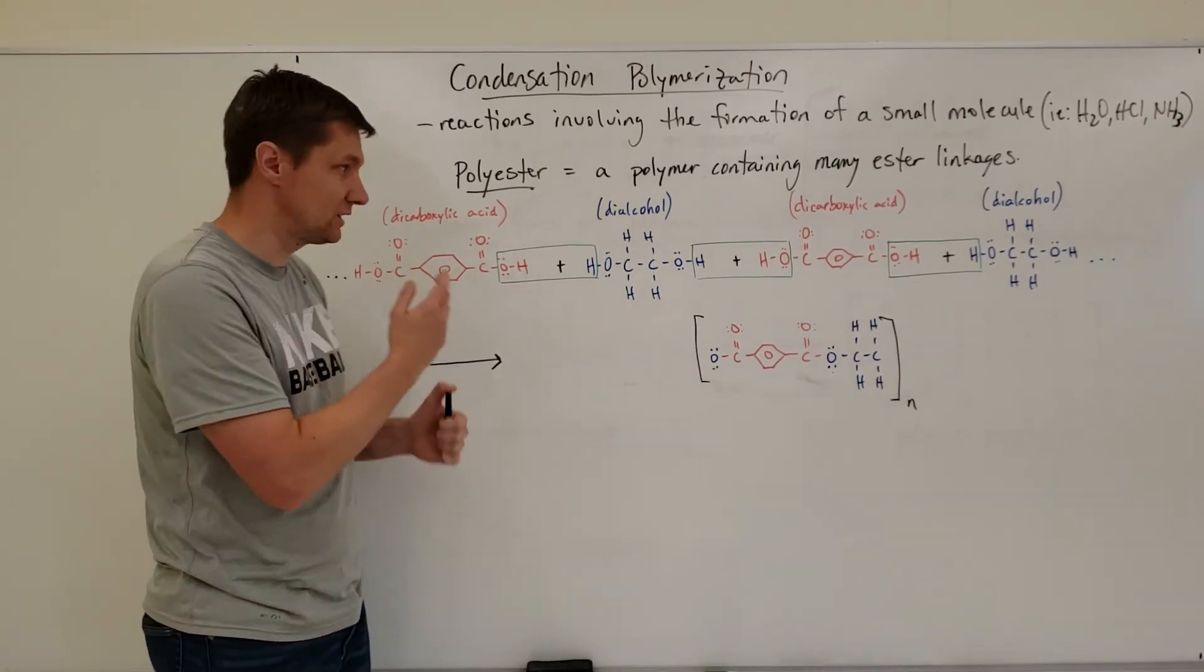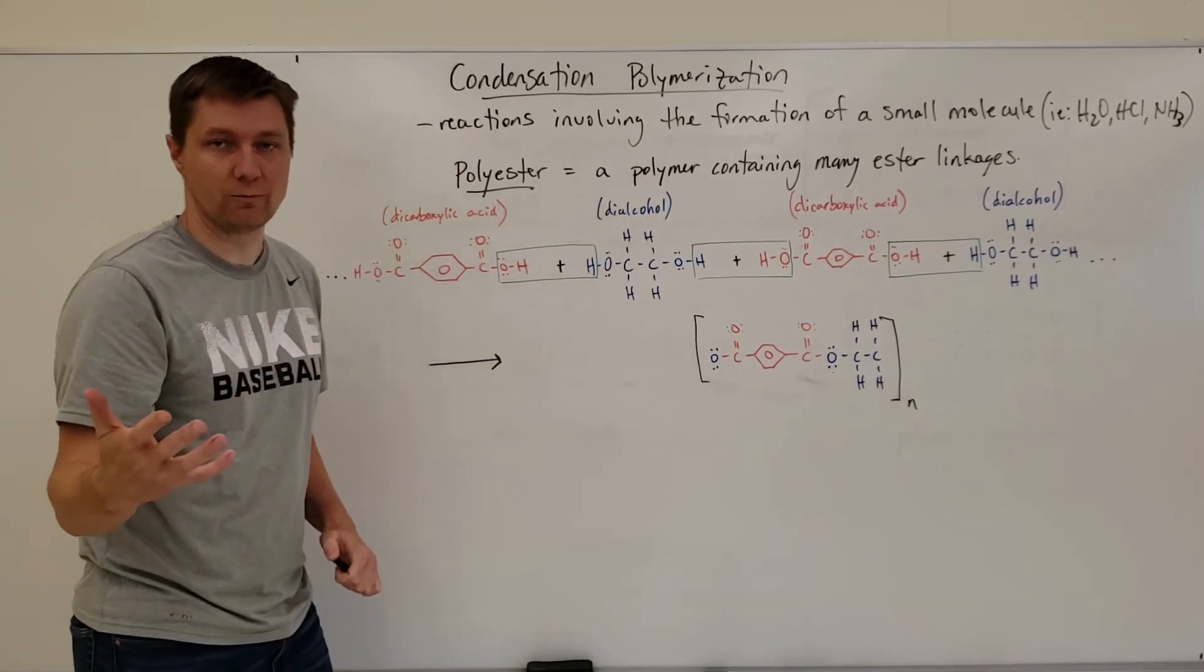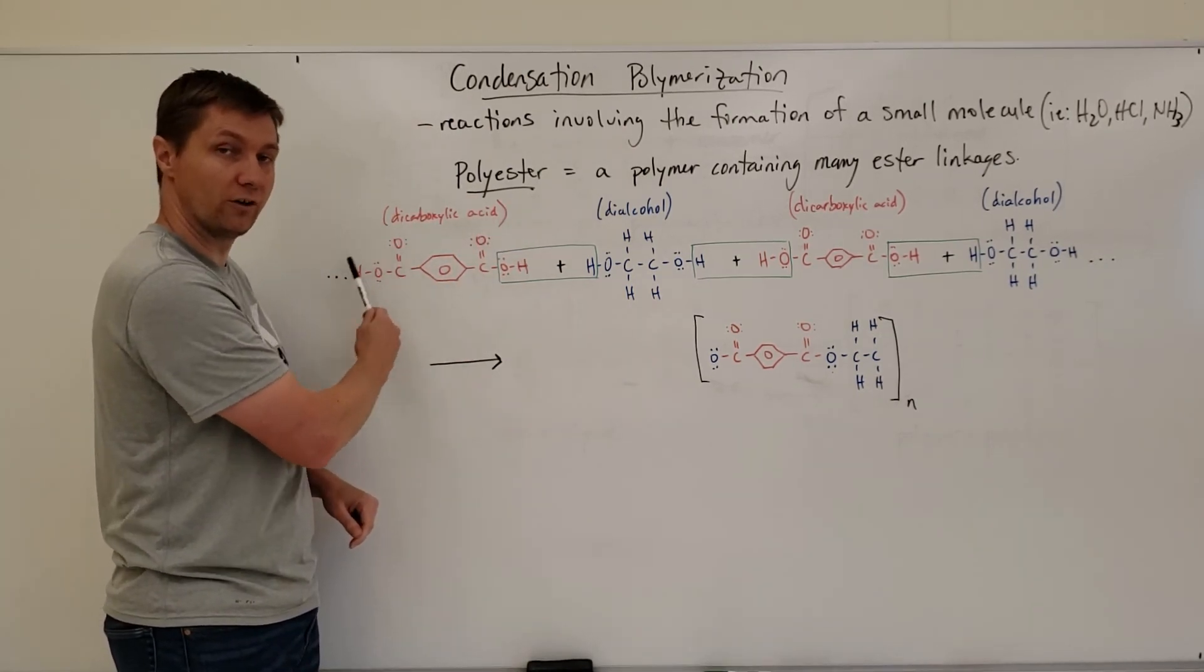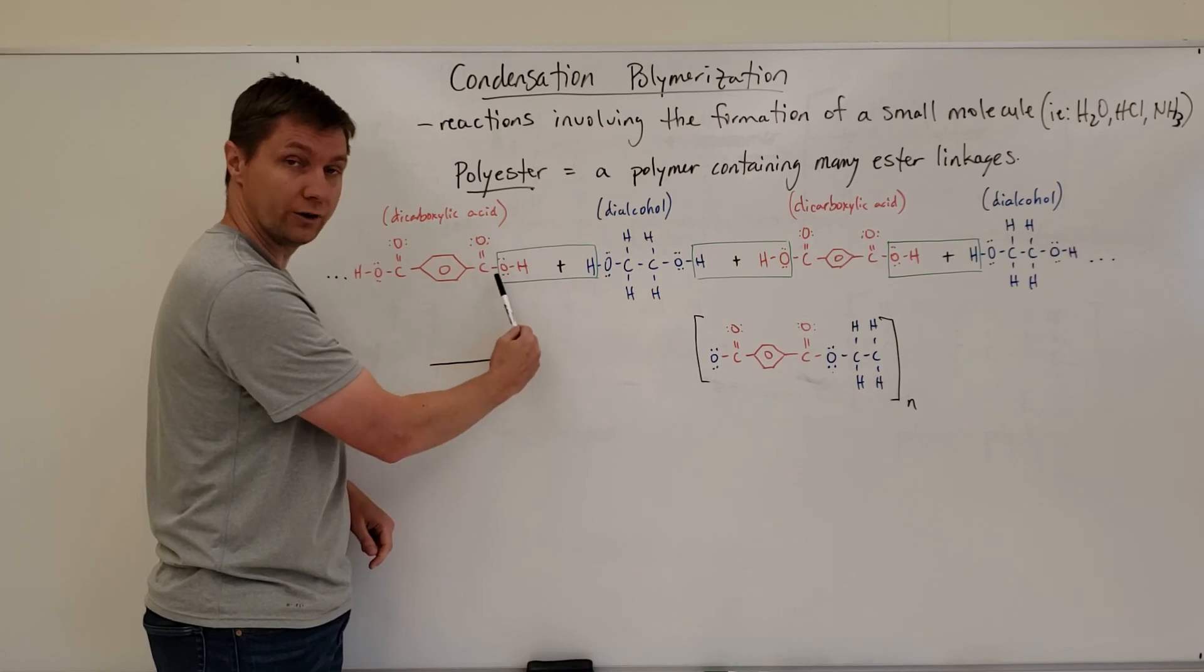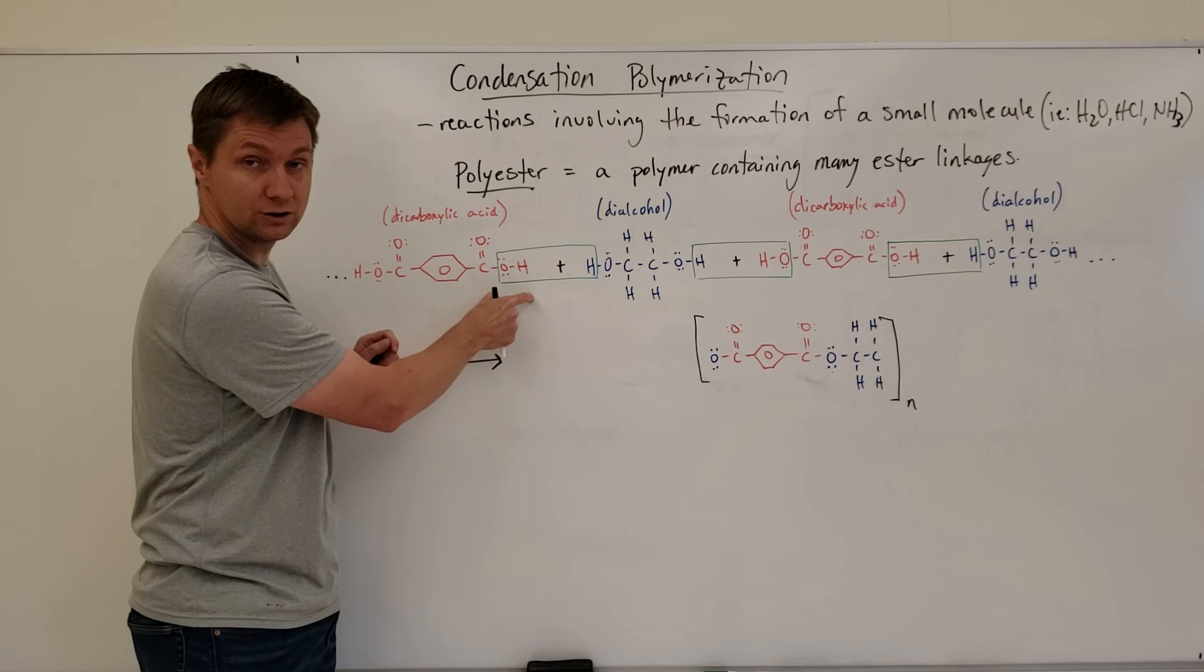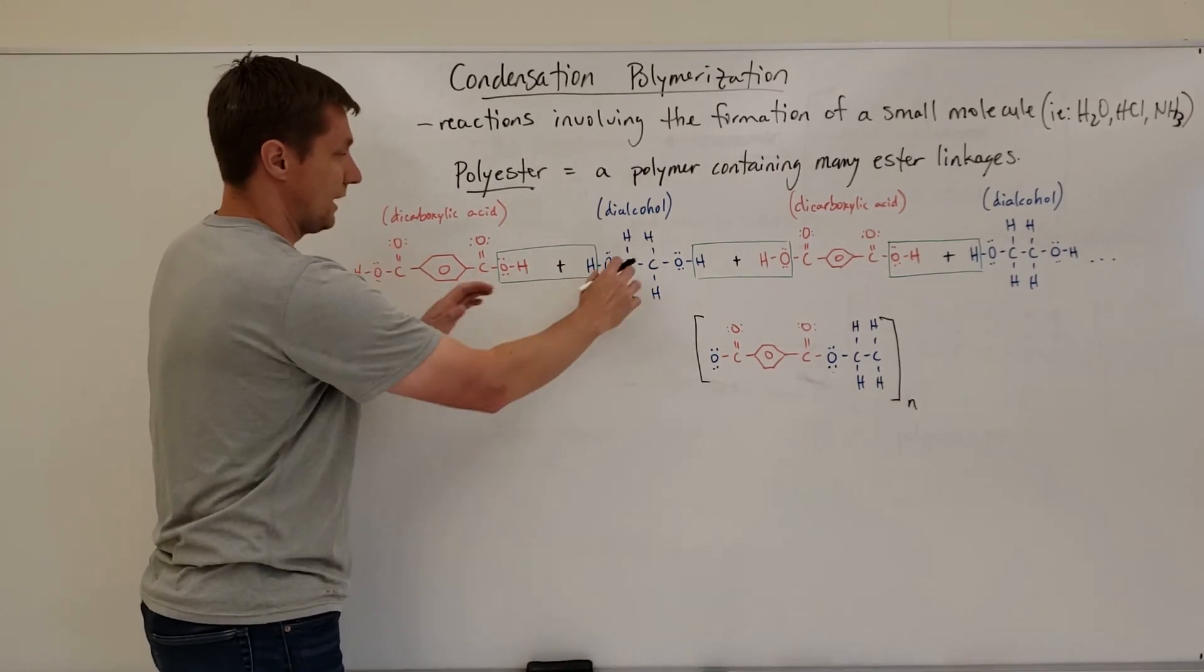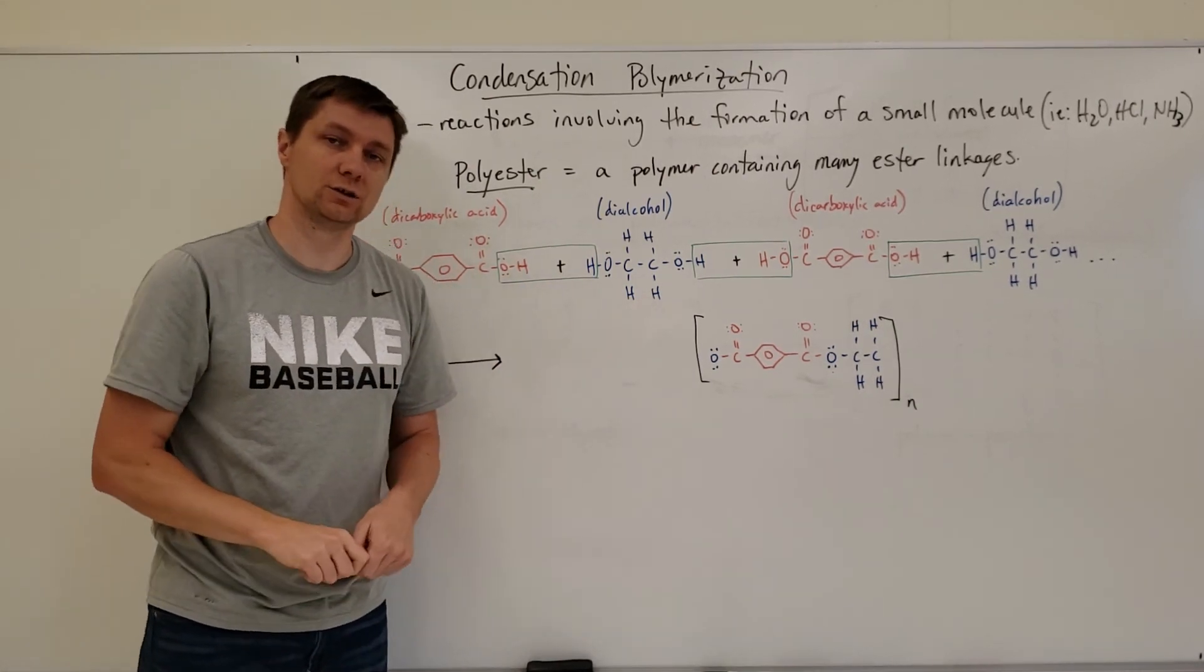Another type of polyester that you can see is you have a molecule here that has a carboxylic acid functional group over here and a hydroxyl or an alcohol functional group over here on this side. So you've got a molecule that has a COOH and an OH within the same molecule, and then just that molecule repeats down the chain where you've got then this carboxylic acid in this molecule next to this alcohol that would then form that ester linkage on that side.